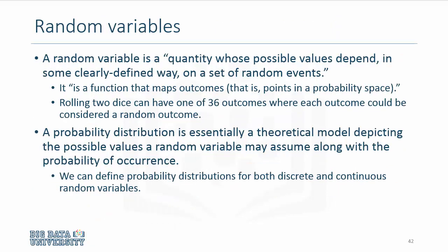The discussion about probability is not complete without discussing random variables. Essentially, a random variable is a quantity whose possible values depend in some clearly defined way on a set of random events. It's a function that maps out outcomes, that is, points in a probability space.